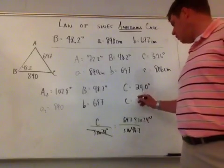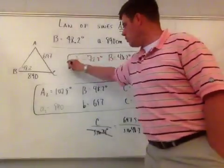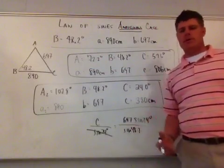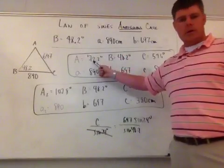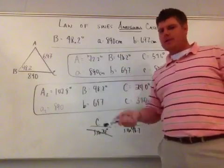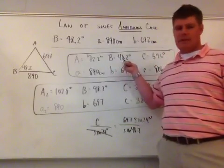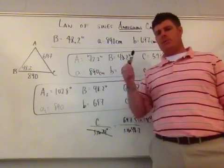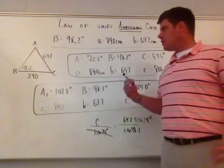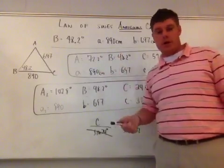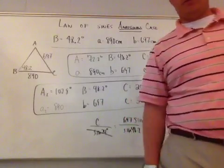So you have one triangle with those measurements and a second triangle with those measurements — that's what causes the ambiguous case. Key observation: the reference angle found (72.2°) was larger than the given angle (48.2°). When the found angle is larger than the given, there will always be a second triangle to check. If the found angle is smaller than the given, subtracting from 180 and adding the given angle will exceed 180, so only one triangle exists.